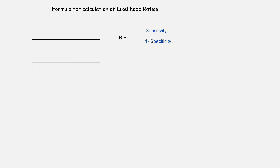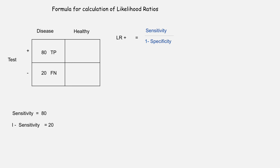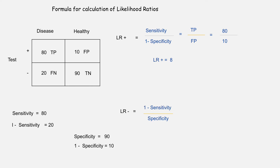The formula for calculation of positive likelihood ratio is usually mentioned as sensitivity divided by 1 minus specificity. If we have a diagnostic test with 80% sensitivity, sensitivity will be 80 and 1 minus specificity will be 20, which is also equal to false negative results. Similarly, if specificity of the test is 90%, specificity will be 90 and 1 minus specificity is 10, which is also equal to false positive results. So we can calculate positive and negative likelihood ratio using a formula based on sensitivity and specificity of a test.